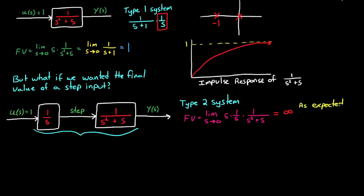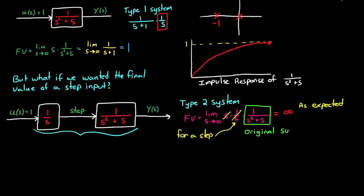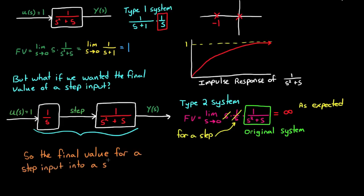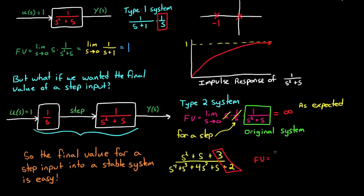Now I want to pause and show you something interesting. For a step response to a transfer function, we add a pole at the origin. And when we use the final value theorem, we add a zero at the origin, and these two cancel each other out, leaving you with the original transfer function. You then set all of the s's to 0 and find the final value. So the final value for a step input into a system with all poles in the left half-plane is really easy — just set s to 0, and what you're left with is the final value.